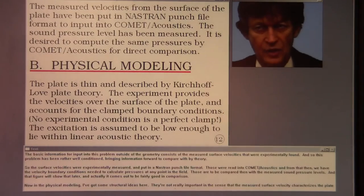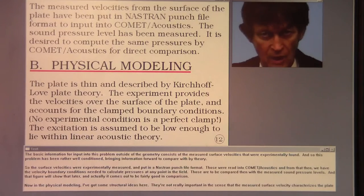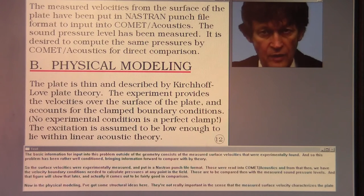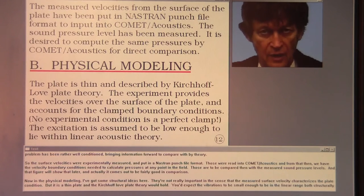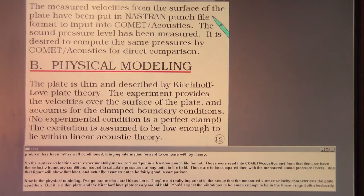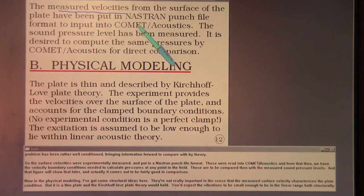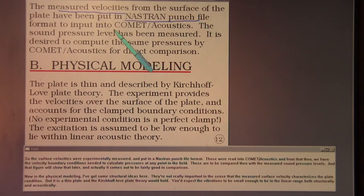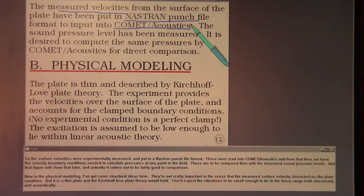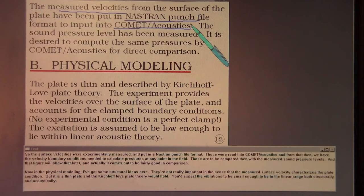The basic information for input into this problem, outside of the geometry, consists of the measured surface velocities that were experimentally found. So this problem has been rather well conditioned, bringing information forward to compare with theory. The surface velocities were experimentally measured and put in a NASTRAN punch file format. Those were read into Comet Acoustics, and from that we have the velocity boundary conditions needed to calculate pressures at any point in the field. Those are to be compared then with the measured sound pressure levels, and the comparison comes out to be fairly good.